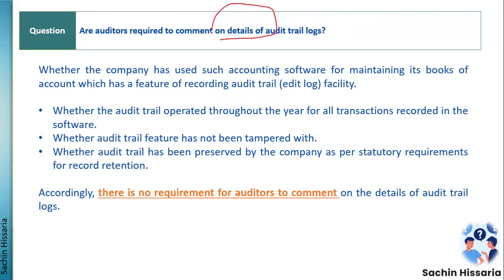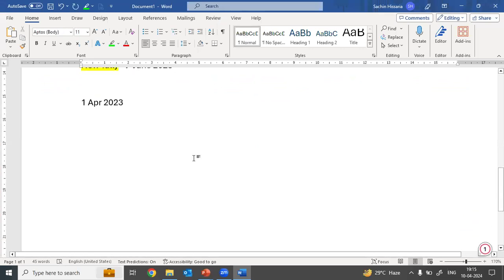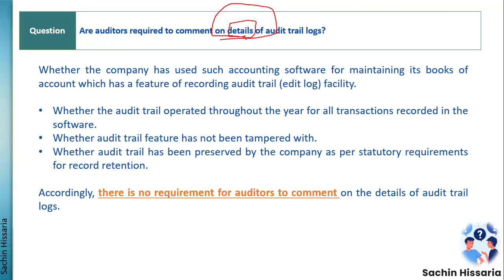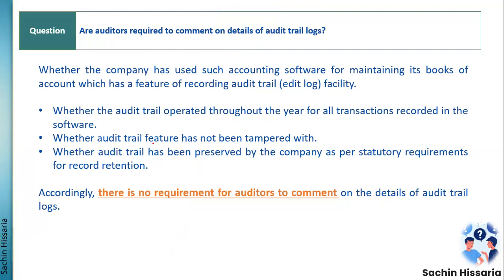Next question: are auditors required to comment on the details of audit trail log — such as date, amount, transaction details, or time? No, auditors need not write the details of audit trail in the report. You just need to check three things: whether the audit trail was operated throughout the year, whether the audit trail feature was tampered with, and whether the trail has been preserved as per statutory requirements.